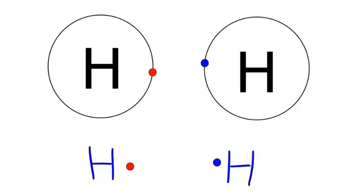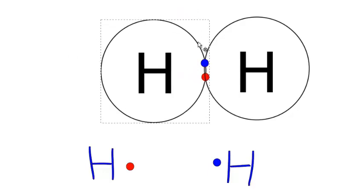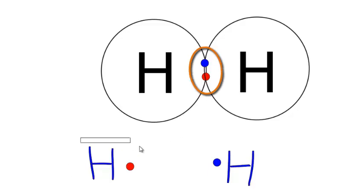Hydrogen only has one in the outer shell, but when it comes together and shares with another hydrogen to form H2, it now has two valence electrons. Its outer shell is full, it's very stable. Same here.